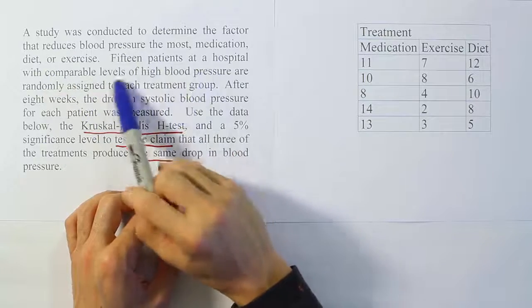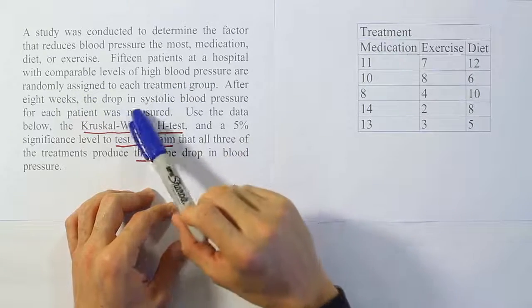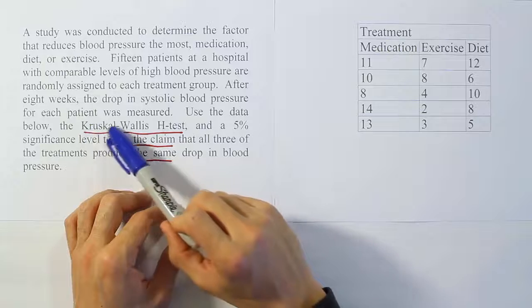Fifteen patients at a hospital with comparable levels of high blood pressure are randomly assigned to each treatment. After eight weeks, the drop in systolic blood pressure for each patient was measured.